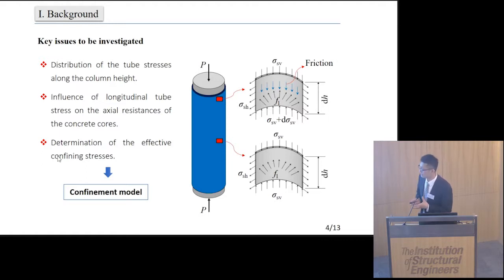Here I list three key issues to be investigated: the distribution of the tube stresses along the column height, the influence of longitudinal tube stress on the axial resistance of the concrete cores, and the determination of the effective confining stresses. All these issues are related to the confinement model in this study.